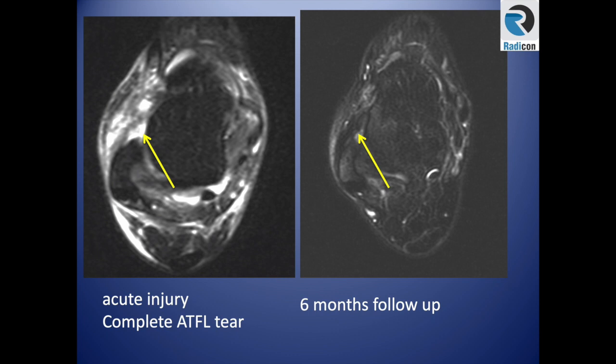This is a lucky patient — an MRI enthusiast who had an injury and placed herself in the magnet six months later due to chronic pain. These ligaments typically scar with some thickening, which can eventually result in anterolateral impingement, which will be covered later.